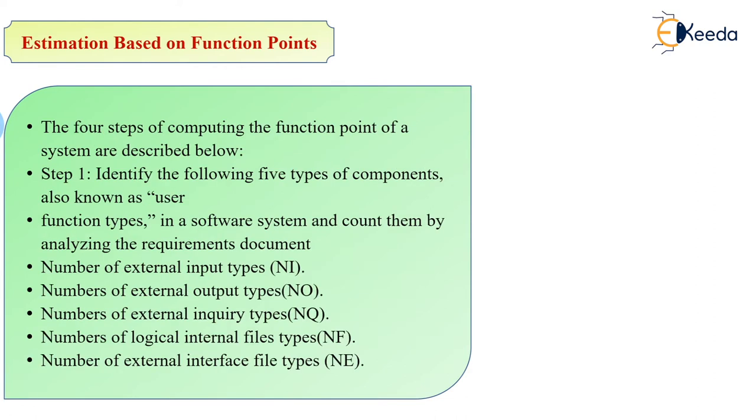There are four steps to computing function points. Step 1 is to identify five types of components in the software system by analyzing the requirements document. These are abbreviated as NEI for external input type, NEO for external output type, NEQ for external inquiry type, NILF for internal logical file type, and NEF for external interface file type.